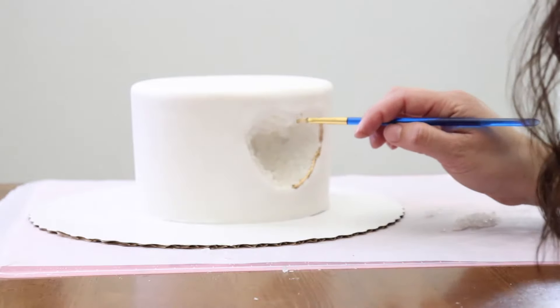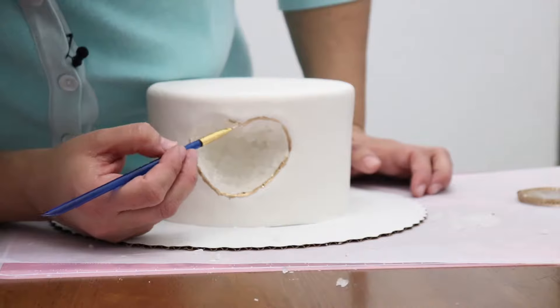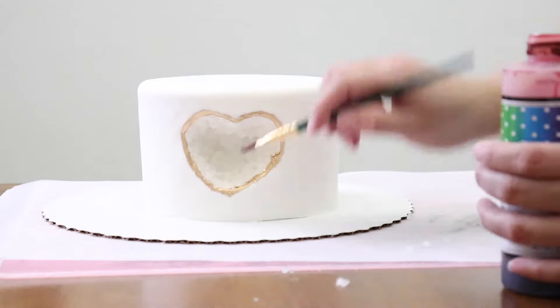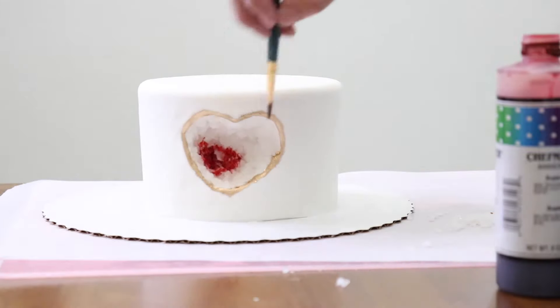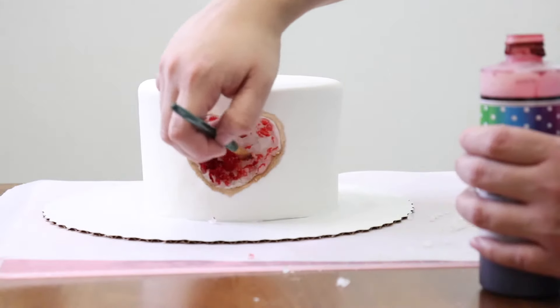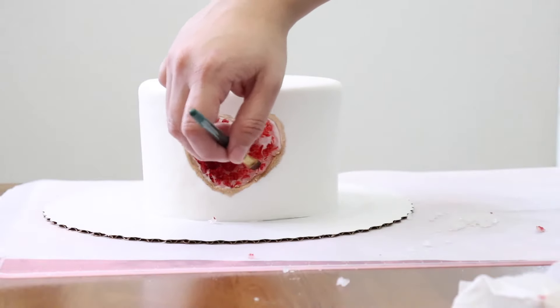Let's outline the heart shape with an edible metallic paint and the use of a brush. Let's color that inside. I'm using airbrush colorings. In the middle I'm adding like 3 to 4 coats of the paint so it gets a little bit darker.